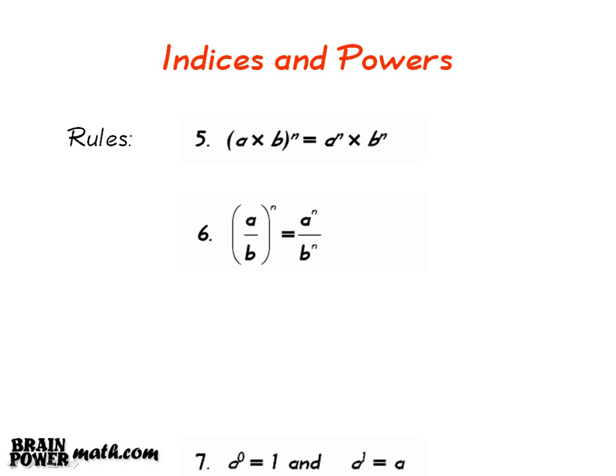Rule 7 tells us that a to the power of 0 is equal to 1, and that a to the power of 1 is equal to a.